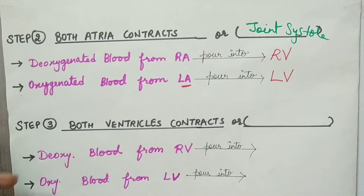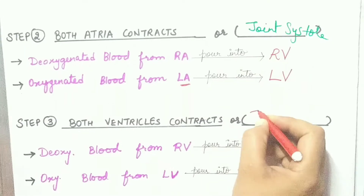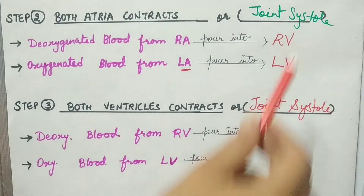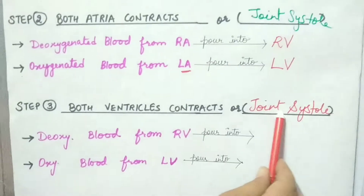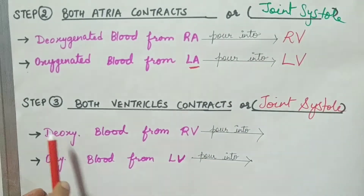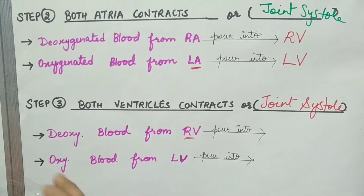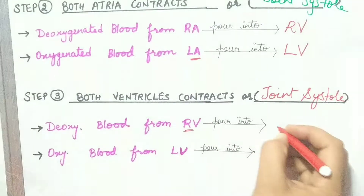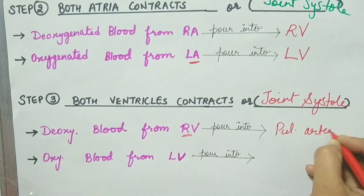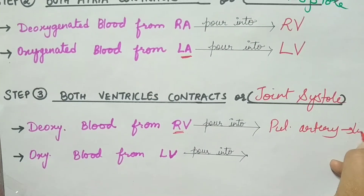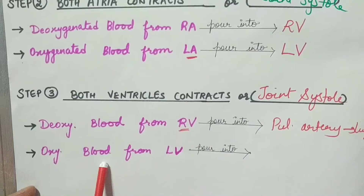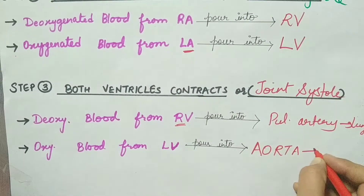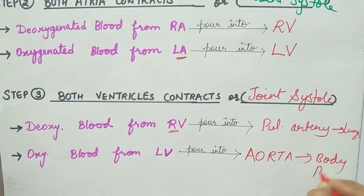Step three is when both ventricles contract — this is also a systolic phase, specifically called the joint ventricular systolic phase. From the right ventricle, deoxygenated blood pours into the pulmonary artery, which takes blood to the lungs for purification. From the left ventricle, oxygenated blood pours into the dorsal aorta, the largest artery, which takes blood to all body parts except the lungs.